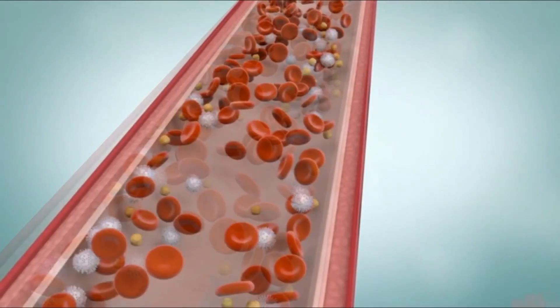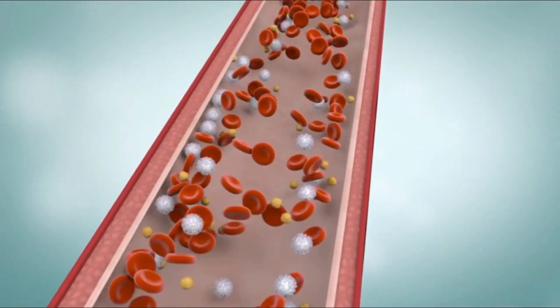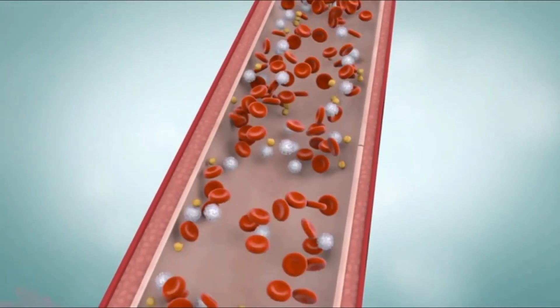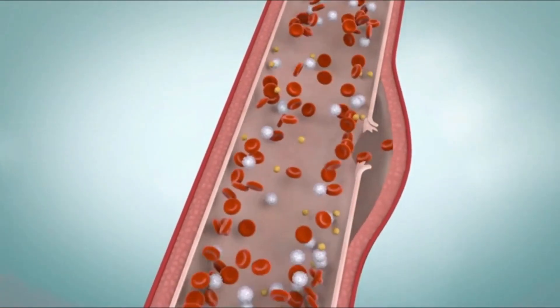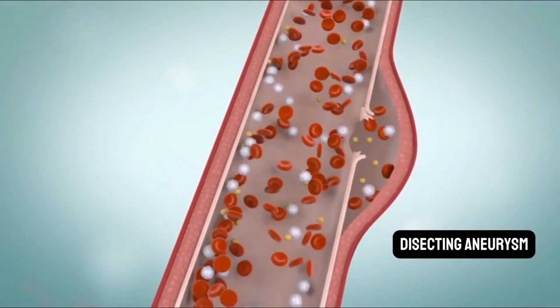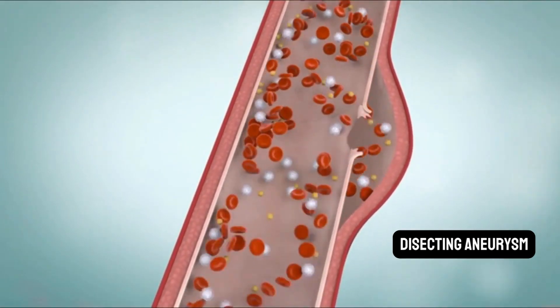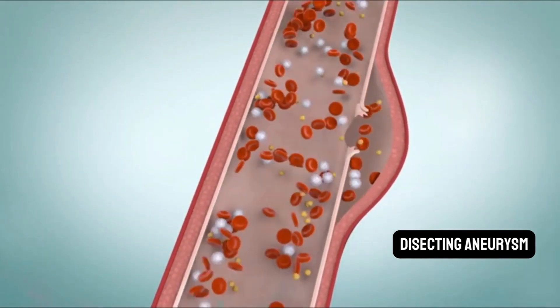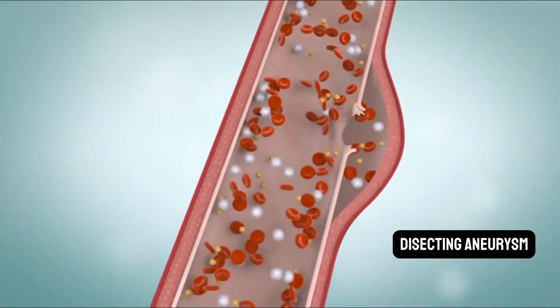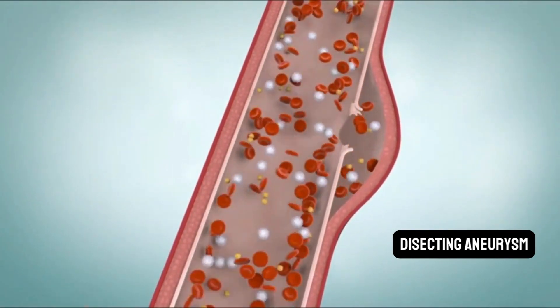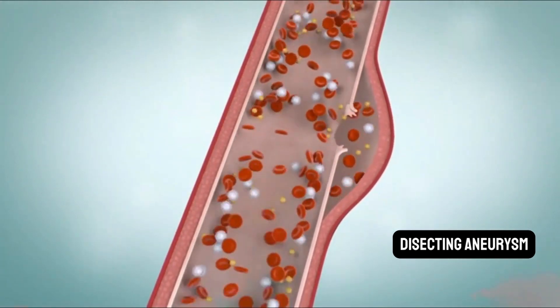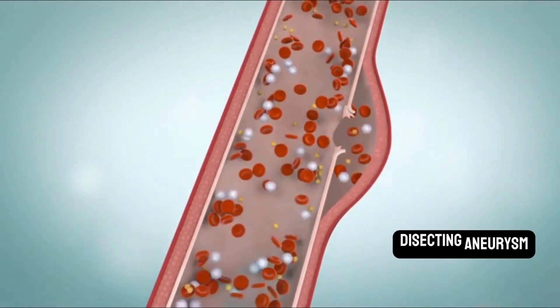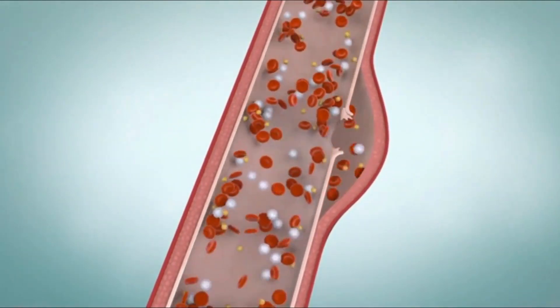A dissecting aneurysm is caused by a tear in the inner layer of the artery wall. This causes blood to leak in between the layers and accumulate on just one side of the artery wall. Dissecting aneurysms are usually caused by an injury, but they can happen naturally.